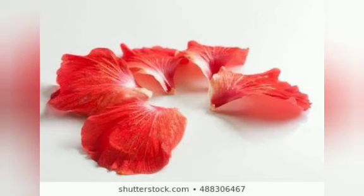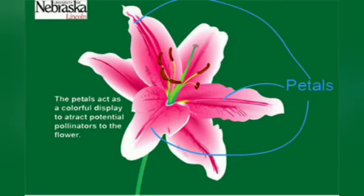Next is the petal. Petals are very colorful — the colored part. So they are very important during pollination. The petals act as a colorful display to attract potential pollinators to the flower, which will take the pollen from one flower to another.